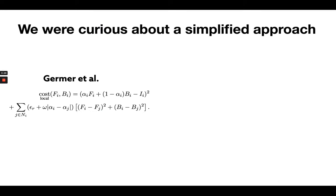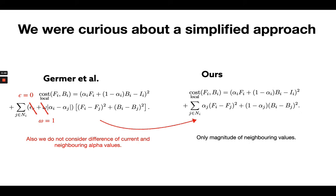Well, we were curious about if there was a simpler way. So we decided to try to get rid of the regularization term and the weight term. And we also do not consider difference of the current and neighboring alpha values. Instead, we only consider the magnitude of the neighboring values.